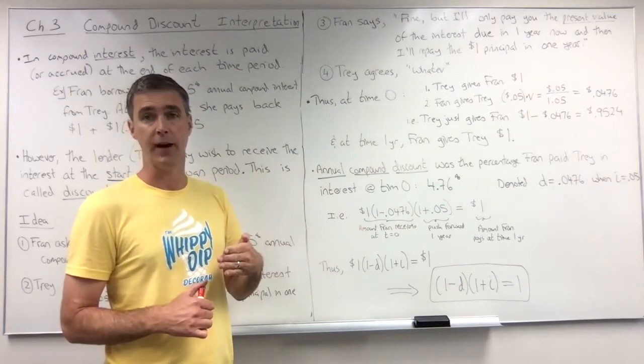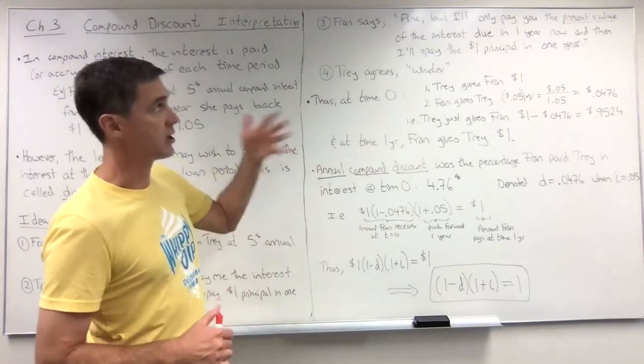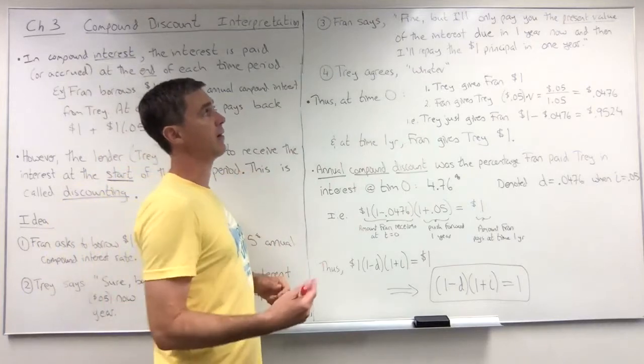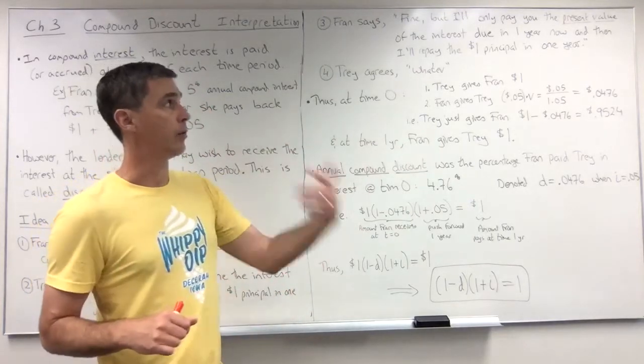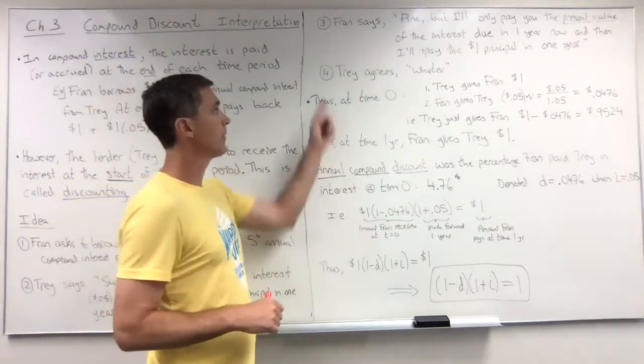So Fran says fine, but I'll only pay you the present value of the interest due in one year right now at time zero, and then I'll repay the dollar principal in one year. Trey agrees, whatever.